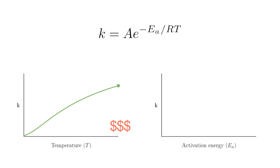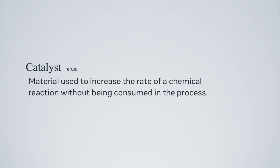Now let's look at the activation energy, which is the minimum amount of energy you need to put into the system for the reaction to occur. As you increase the activation energy, it's not surprising that the reaction rate decreases. So what we want to do is reduce the activation energy as much as possible. And how do we reduce the activation energy? Well, we use something called a catalyst. A catalyst is a material used to increase the rate of a chemical reaction without being consumed in the process.